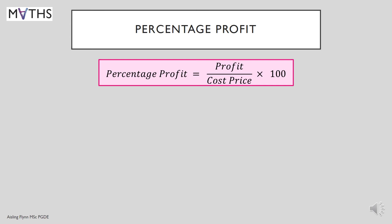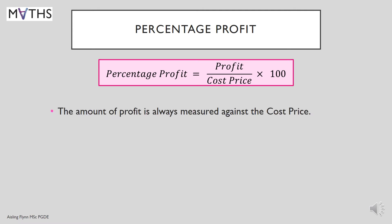There's a little formula here. To calculate percentage profit, you put profit over cost price — you're measuring on cost price, that's a fraction. And multiplying by 100 converts that fraction to a percentage. The important part is the amount of profit is always measured against the cost price, so you should always put profit over cost price — always cost price.